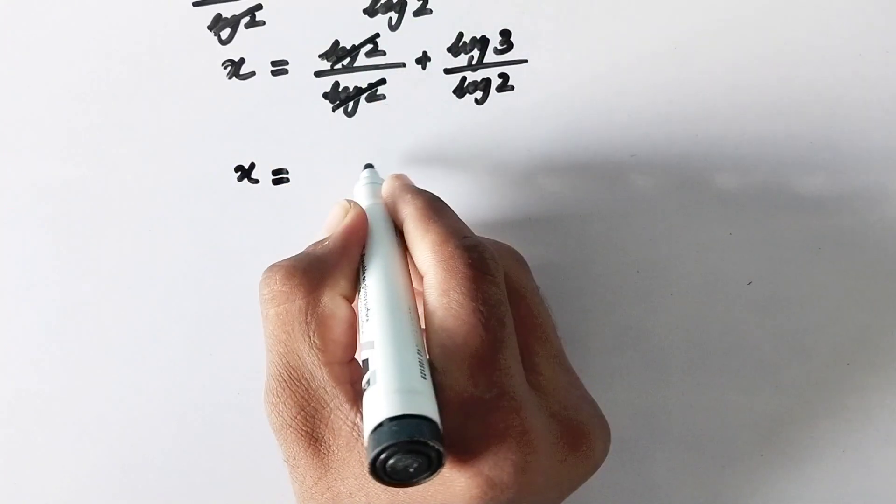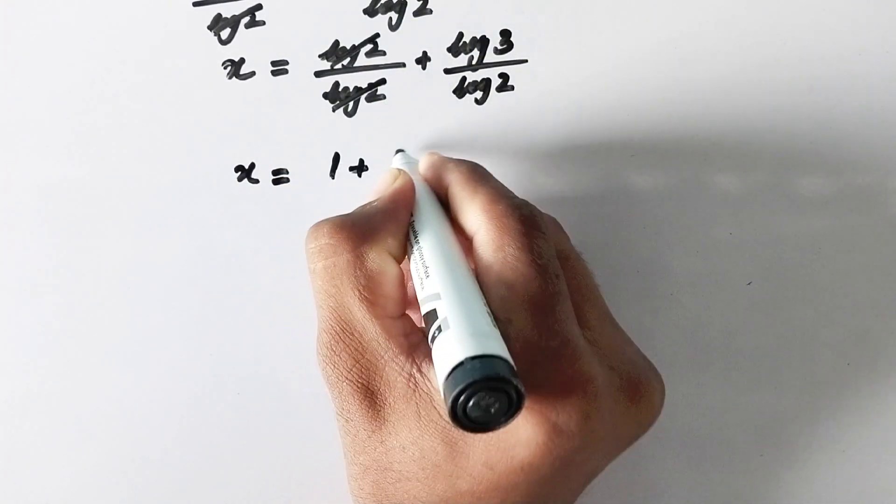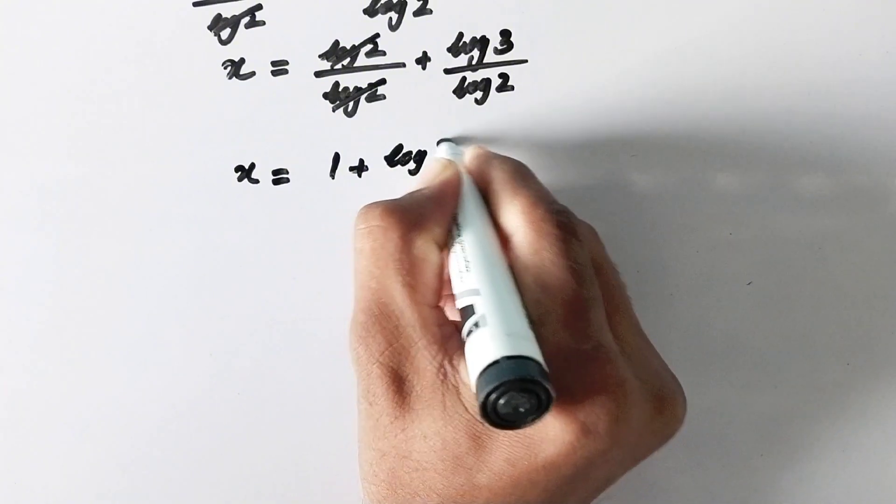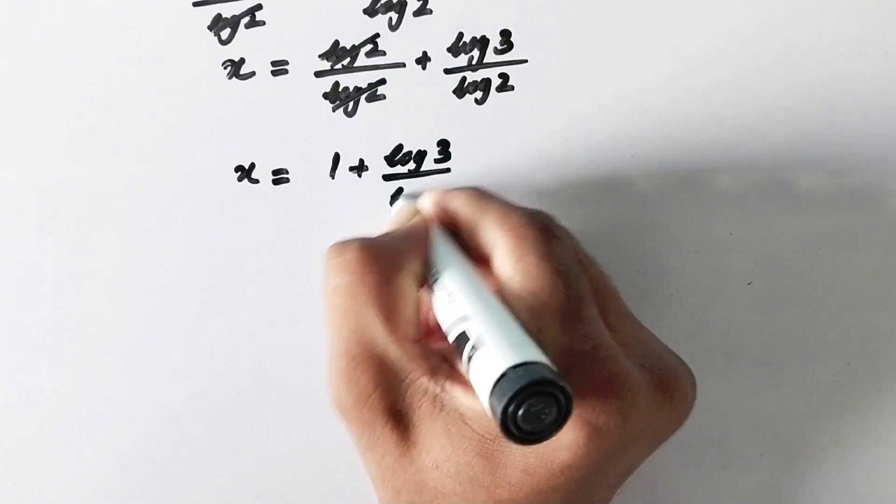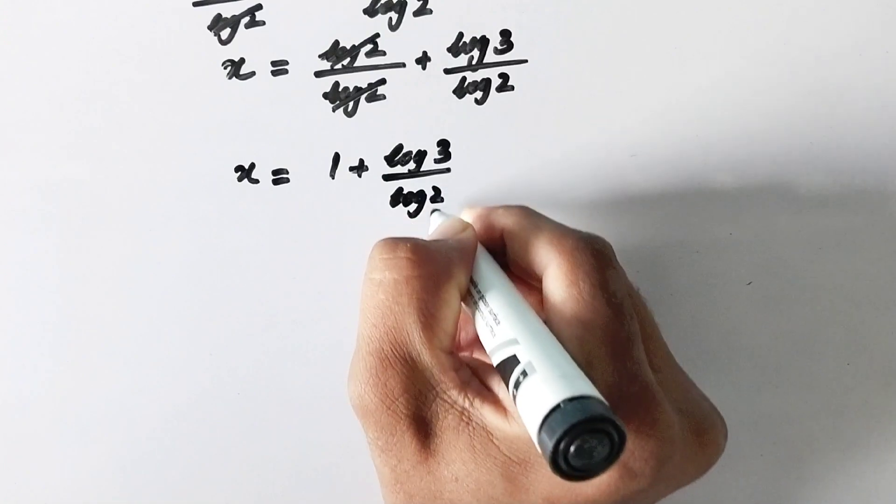they will cancel out each other. Here will be 1 plus log of 3 over log of 2. And in the next step we will write x is equal to 1 plus the value of log of 3